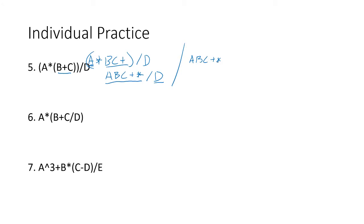In this problem we have parentheses and I have division — division happens first: c d divide. Then b is my first operand, c d divide is my second operand, and the operator is addition. That becomes b c d divide plus. Then I have a times all of that in front. So a is the first operand, b c d divide plus is my second, giving a b c d divide plus multiply.